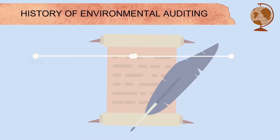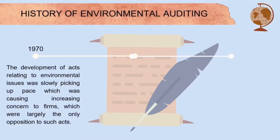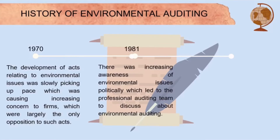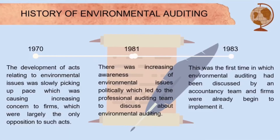Let's look into the history of environmental auditing. In the 1970s, the development of acts relating to environmental issues was slowly picking up pace, which was causing increasing concern to firms, which were largely the only opposition to such acts. In 1981, there was increasing awareness of environmental issues politically, which led to the professional auditing team to discuss about environmental auditing. In 1983, this was the first time environmental auditing had been discussed by an accountancy team, and firms were already beginning to implement it.